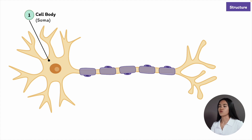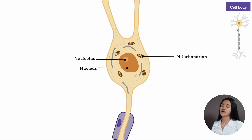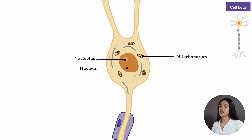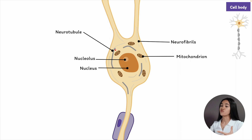Starting with the cell body, also known as the soma, we also have the nucleus here. The cell body contains most of a neuron's organelles, including its nucleus, mitochondria, ribosomes, and nerve fibers. The nucleus contains the genetic information — the chromosomal DNA of the cell — and ribosomes are the protein factories; they carry out protein synthesis. Neurons are also made up of structural proteins called neurofilaments, which are linked together to form bigger neurofibrils. They also have a network of neurotubules that help move materials around the cell.